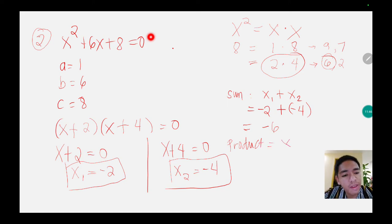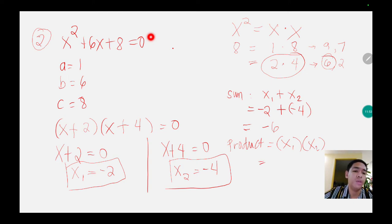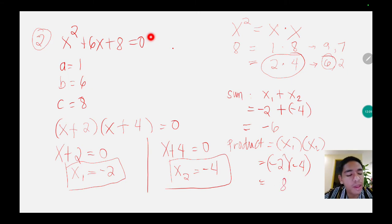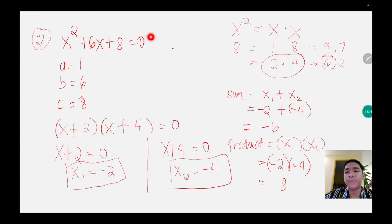x sub 1 is negative 2 multiplied by negative 4. 2 times 4 is equal to 8; negative times negative is equal to positive, so the correct answer is positive 8. The value of a is 1, the value of b is 6, and the value of c is 8.